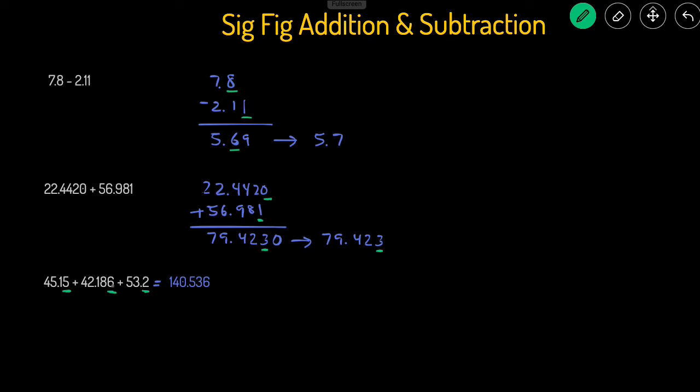Two digits away from the decimal point, three digits away, and one digit away. The one that's going to be the most to the left is the one that's the least digits away from the decimal point, so that would just be the ones.